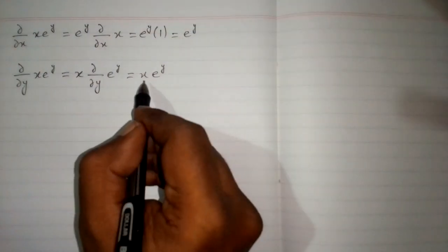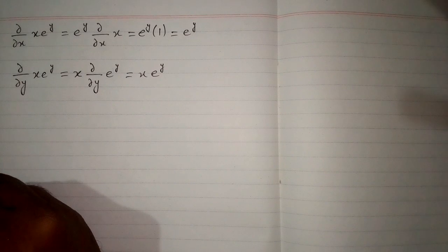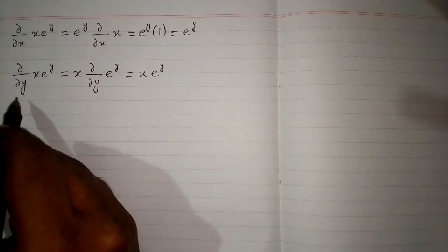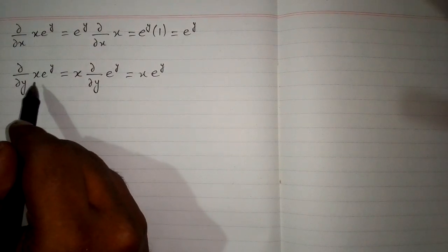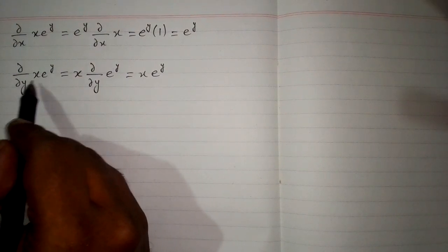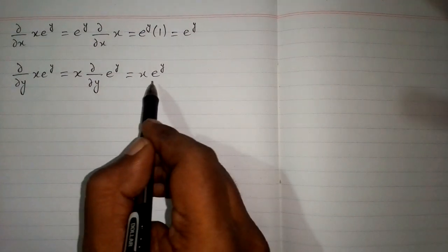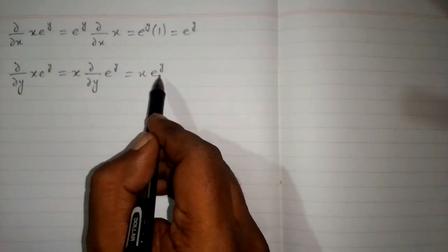So we have x times e to the power y. So the partial derivative of x times e to the power y with respect to y is x times e to the power y.